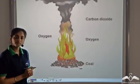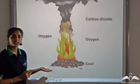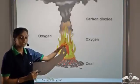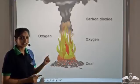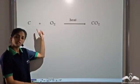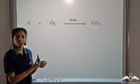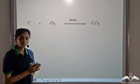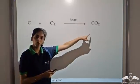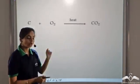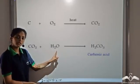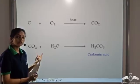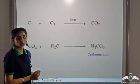Next we take carbon. Carbon, when it is heated in the presence of oxygen, burns to form carbon dioxide and we see a yellow flame. The reaction is: carbon reacts with oxygen when heated to form carbon dioxide gas. Again, this is a non-metallic oxide. When a non-metallic oxide is treated with water, it forms the corresponding acid. So carbon dioxide forms carbonic acid, that is H₂CO₃.